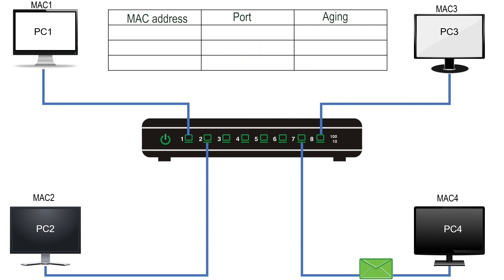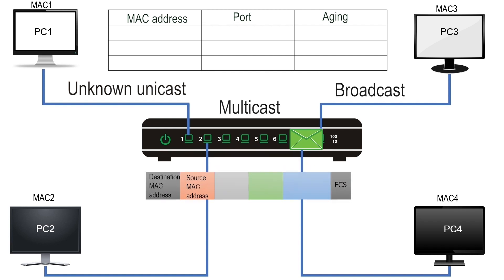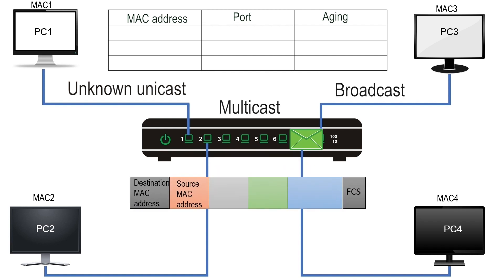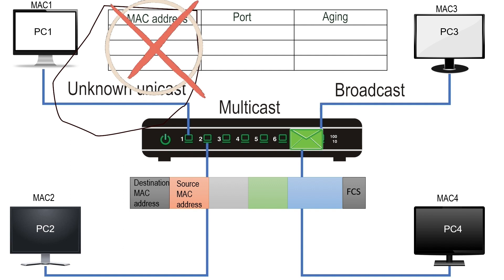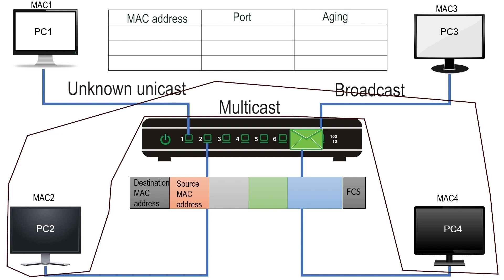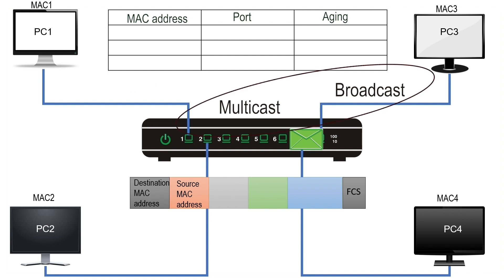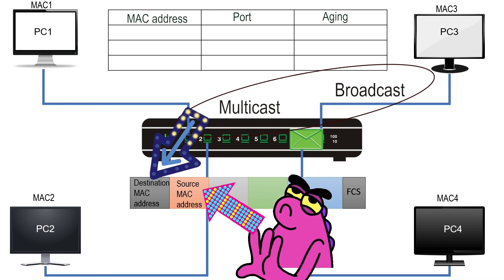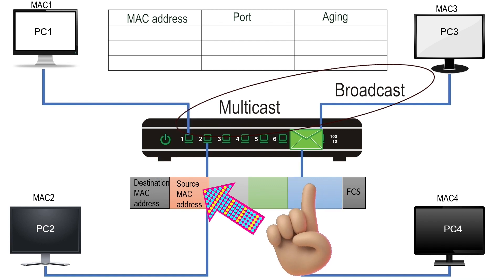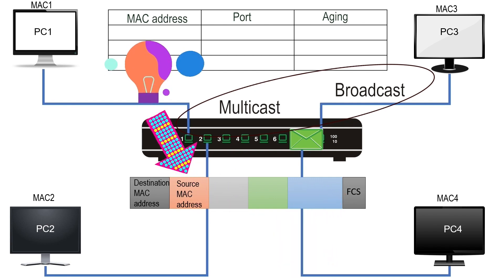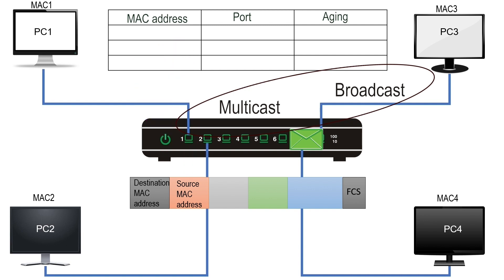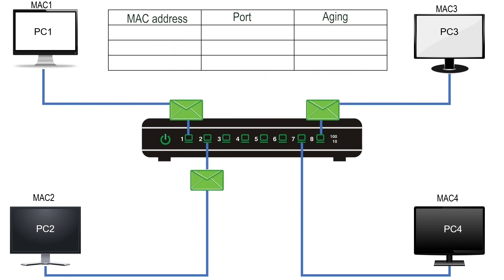A switch floods a frame if it has an unknown unicast, multicast, or broadcast address in the destination address field. An unknown unicast address is an address not available in the CAM table. A multicast address belongs to a group of devices. A broadcast address belongs to all devices on the local network. Multicast and broadcast are destination-only addresses — they are never used in the source address field of a frame. Since a switch learns addresses from the source field, it never learns multicast or broadcast addresses. These addresses always remain unknown to the switch.